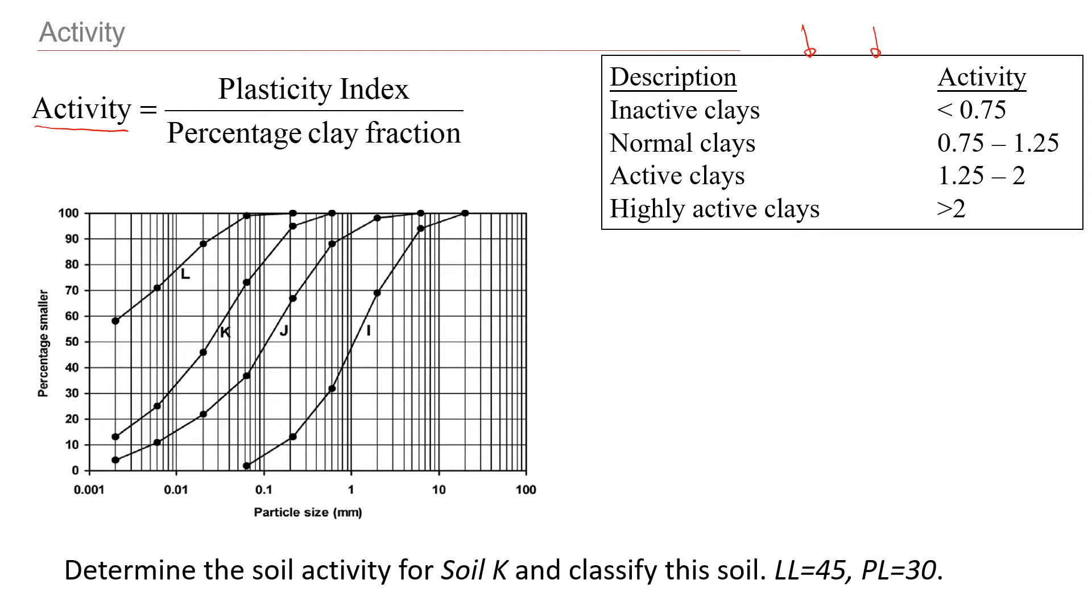It says that we're going to classify soil K based on its activity. Where is K? It's here. This is OK. And what we're also given is the liquid limit and plastic limit of the soil. Usually we write 45, but it means percentage. This is water content. We can say percentage, 30%.